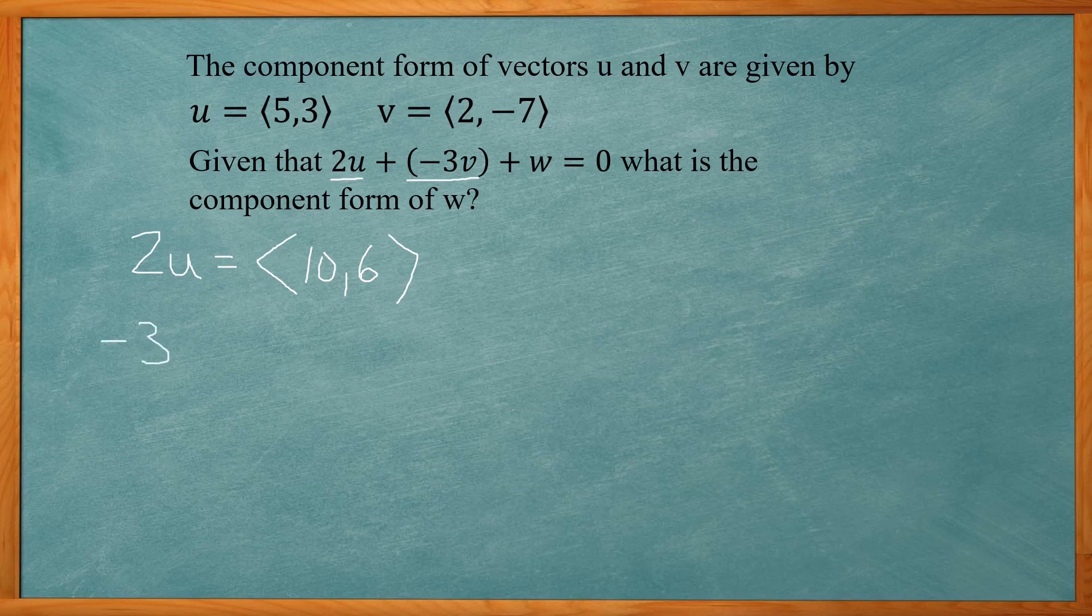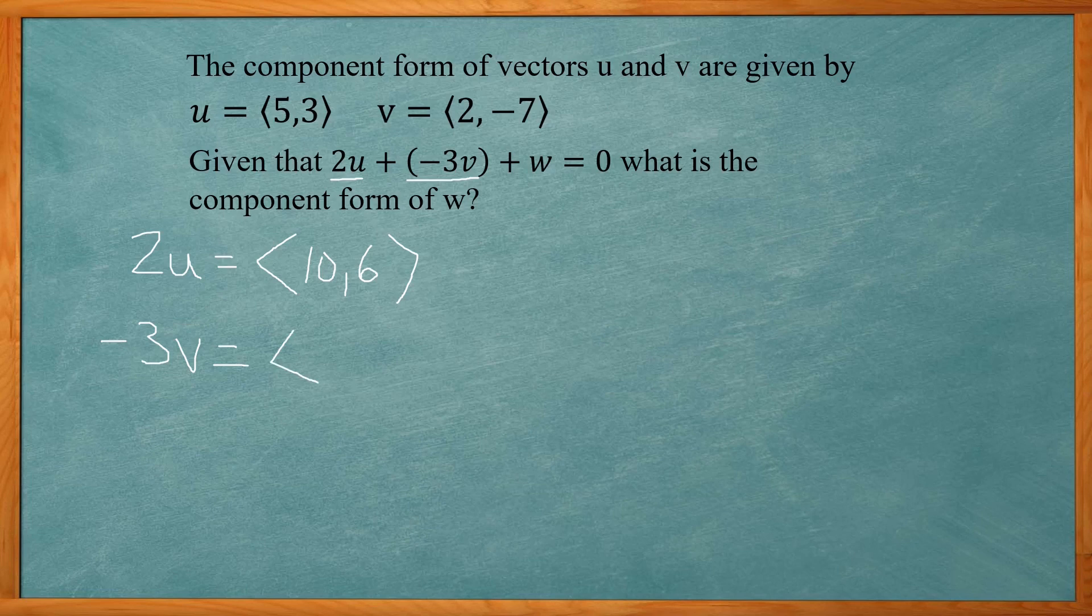Negative 3V, we'll be multiplying each part of it times negative 3. So that'll give me negative 6 and positive 21.